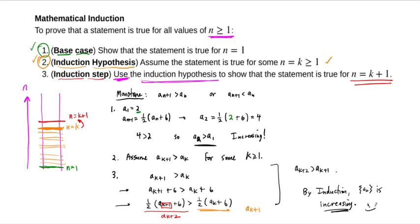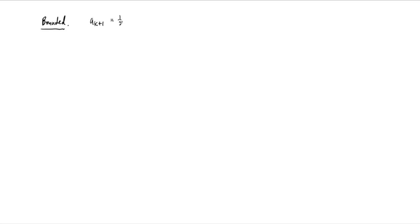We're halfway there — we've got the monotone part. Now we need the bounded part. For the bounded part, we need an upper bound. It's not immediately clear what the upper bound should be, but looking at the recursion formula, I'm going to claim that a sub n is less than or equal to 6 for all n. I'm making this guess based on the formula: if you add 6 and divide by 2 over and over again, you can also write out the first few terms.